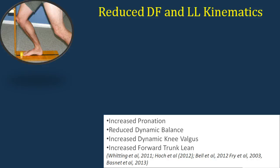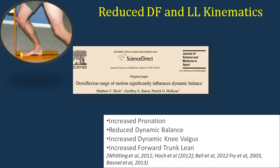Moving on to dorsiflexion, which is a key component: how does reduced dorsiflexion affect lower limb kinematics? The study by Witting and Oll showed that limited ankle dorsiflexion could lead to increased pronation, so there is a direct link. There is also a link between dorsiflexion range of motion and dynamic balance — Hosh in 2012 showed that clients with limited dorsiflexion had reduced scores on the star excursion balance test, which is an indicator for injury risk.